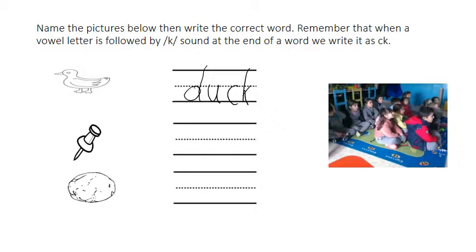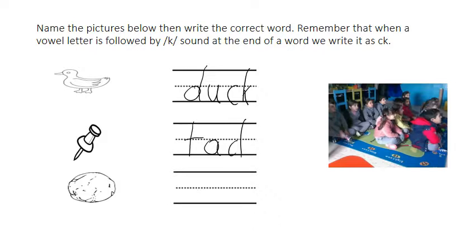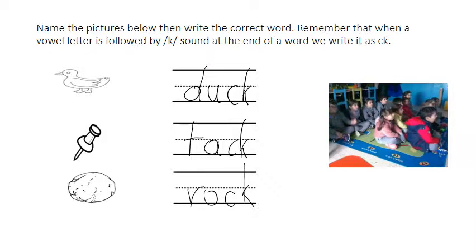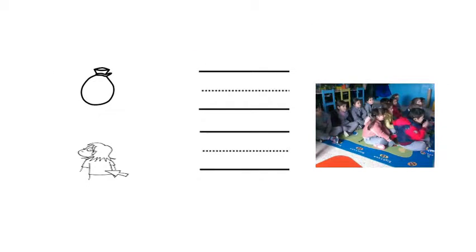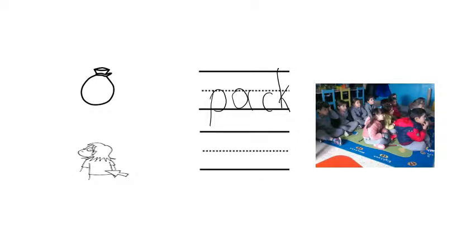What's the second picture? Tack. T, A, C, K. What's the third one? Rock. R, O, C, K. Rock. Excellent, boys and girls. Let's continue with the pictures. What's this picture? A pack. P, A, C, K. Pack. And what's the last one? Back. B, A, C, K. Back. Give yourself a very big clap.